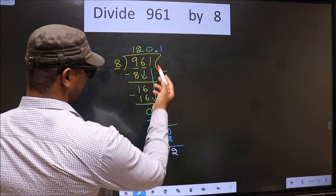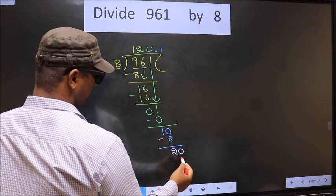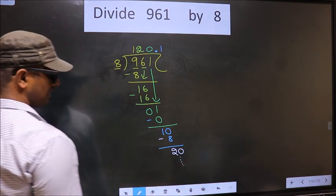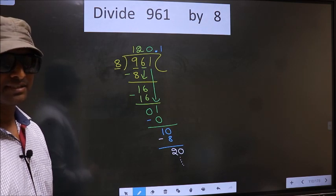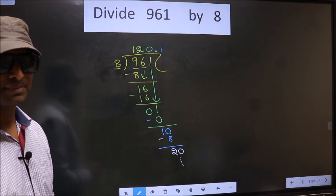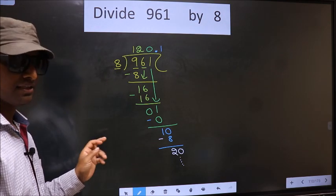2 is smaller than 8. We already have decimal. So you directly take 0 and continue the division. I am not doing that. Did you understand where the mistake happens? You should not do that mistake. Am I clear?